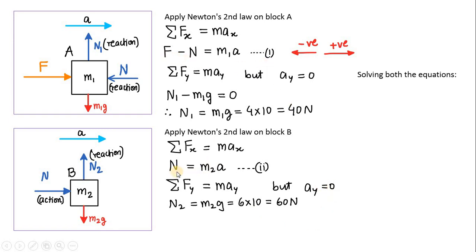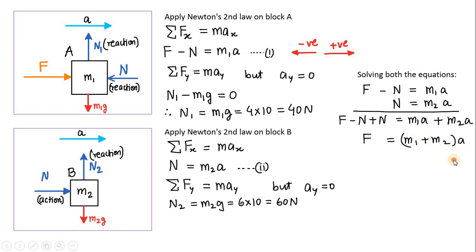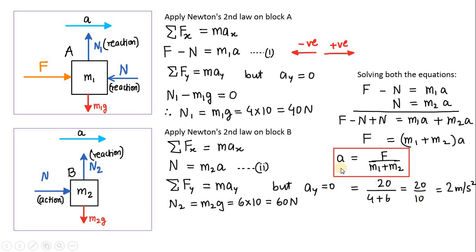Now look at equation 1 and equation 2 together. Adding both equations: on the left side F minus N plus N gives F; on the right side M1·A plus M2·A. The N's cancel, giving F equals (M1 plus M2) times A. Therefore acceleration A equals F divided by (M1 plus M2), which is 20 divided by (4 plus 6) = 2 m/s².